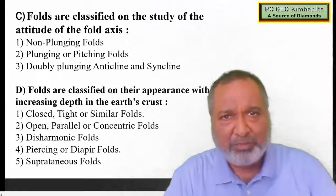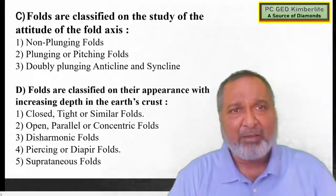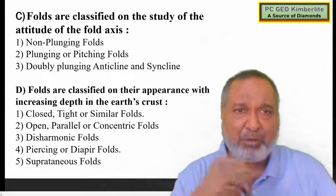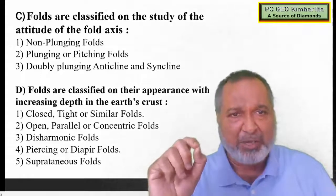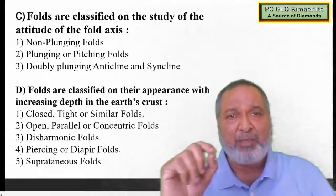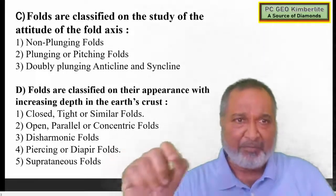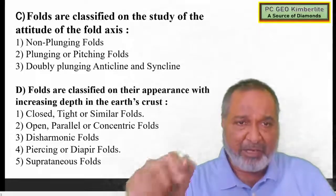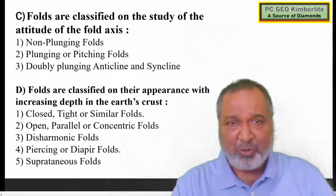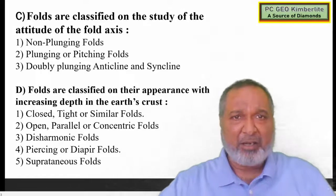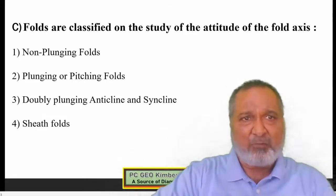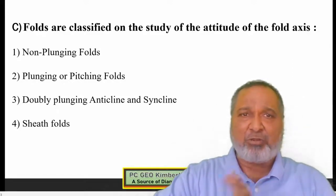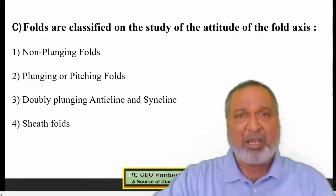We are going to see two sets. Set C: folds are classified on the basis of the study of the attitude of the fold axis. In that we are going to see three important folds: non-plunging fold, plunging or pinching fold, and doubly plunging fold — including doubly plunging anticline and doubly plunging syncline. Similarly the next type: folds classified on their appearance with increasing depth in the earth crust. The first set includes non-plunging, plunging, doubly plunging, and sheet fold.